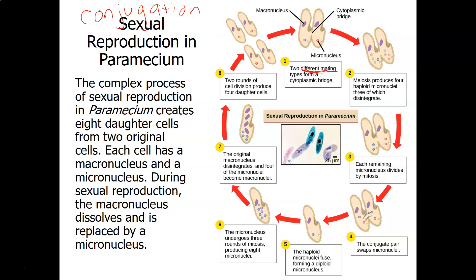During conjugation, two paramecia line up side by side — you can watch this happen with pond water and a microscope. The mating types are determined by different types of micronuclei. As long as the two individuals are genetically different, exchanging genes produces variety in offspring, which is one of the main purposes of sexual reproduction. Each paramecium has both a macronucleus and a micronucleus.